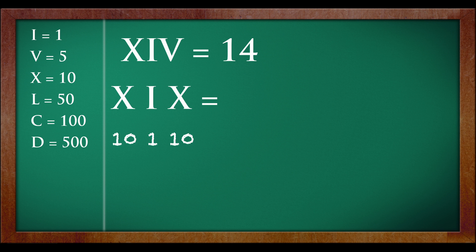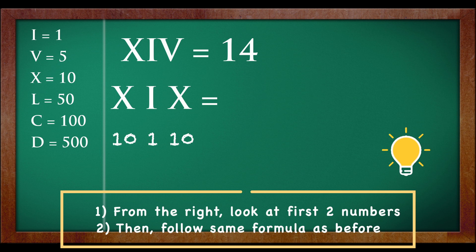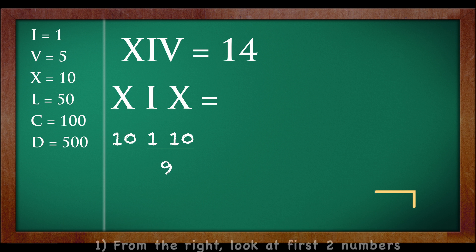So, similarly with the trick from 14, you have to do the same thing to XIX. Let's look at the two numbers from the right, 1 and 10. Because it's ascending, we have to minus it. 10 minus 1 is equal to 9. Now, you already know that X is 10. So, just have to add because it is descending. 10 plus 9 is equal to 19.